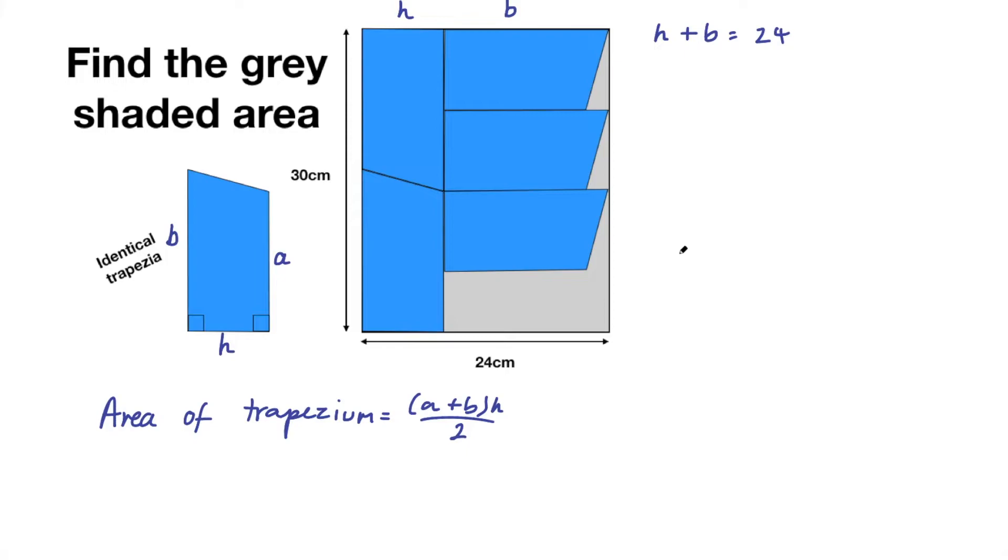Also this is where my problem with this question arises because they don't tell you in detail how these trapezia fit inside this rectangle. They don't tell you for example that these two short sides fit exactly along this long side but you need to assume that in order to get the correct answer. We're going to assume that it looks like these two short sides that we've called h fit exactly along the long side of that shape.